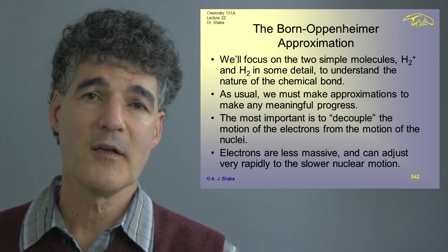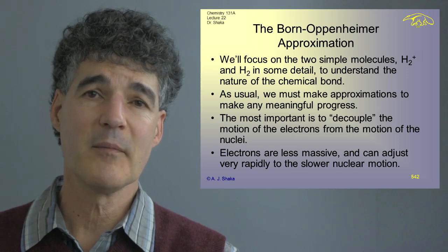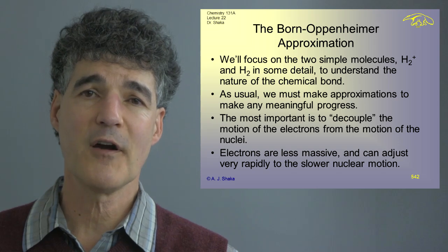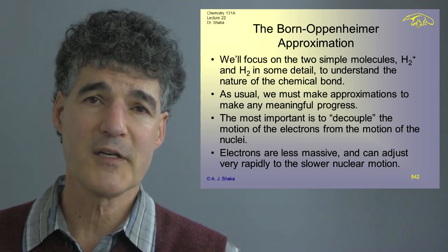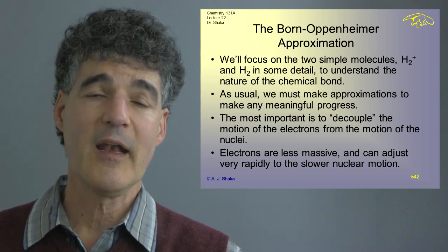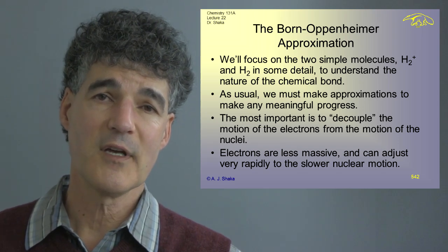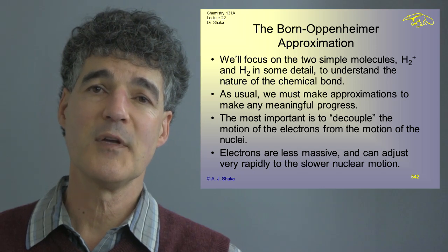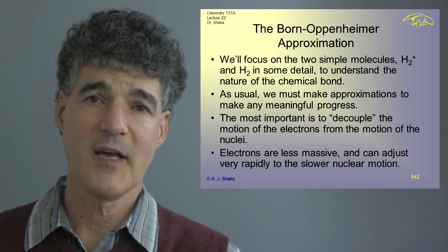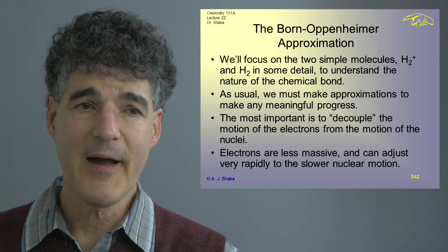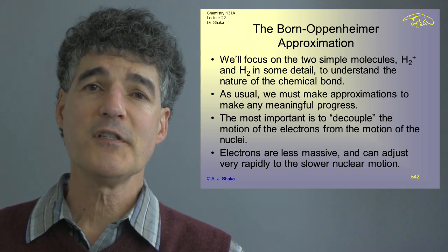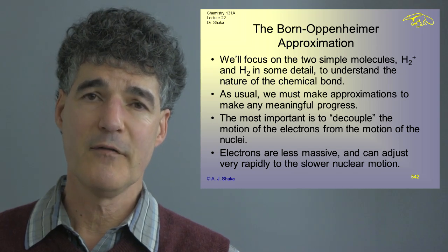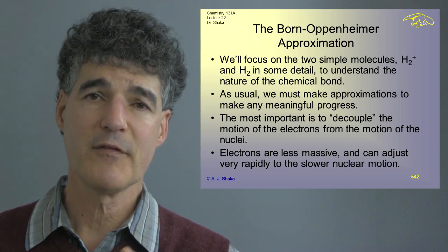If we're going to talk about molecules — even when we talked about helium, we had to use approximations. We either had to make a good guess with variational theory or try perturbation theory. Now that we've got two nuclei, two centers, even with one electron, it's going to be extremely hard to solve things exactly. The first idea is that we want to decouple the motion of the nuclei from the motion of the electrons.